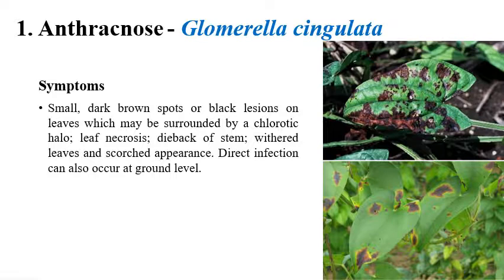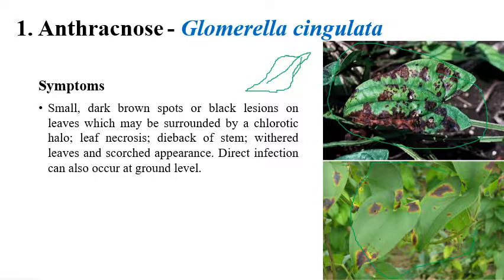The first disease is anthracnose, caused by Glomerula singulata. On mung bean leaves, you can see small dark brown or black color lesions. The characteristic and diagnostic symptom of anthracnose in any crop — mango or any other — is the presence of black color spots. Here you can also see darker brown or black spots on leaves, which are surrounded by a chlorotic, yellow color halo.